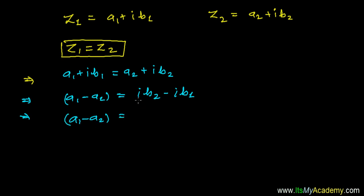I can take i common, so I get i times (b2 minus b1). And now I'm going to square both sides. Squaring both sides.